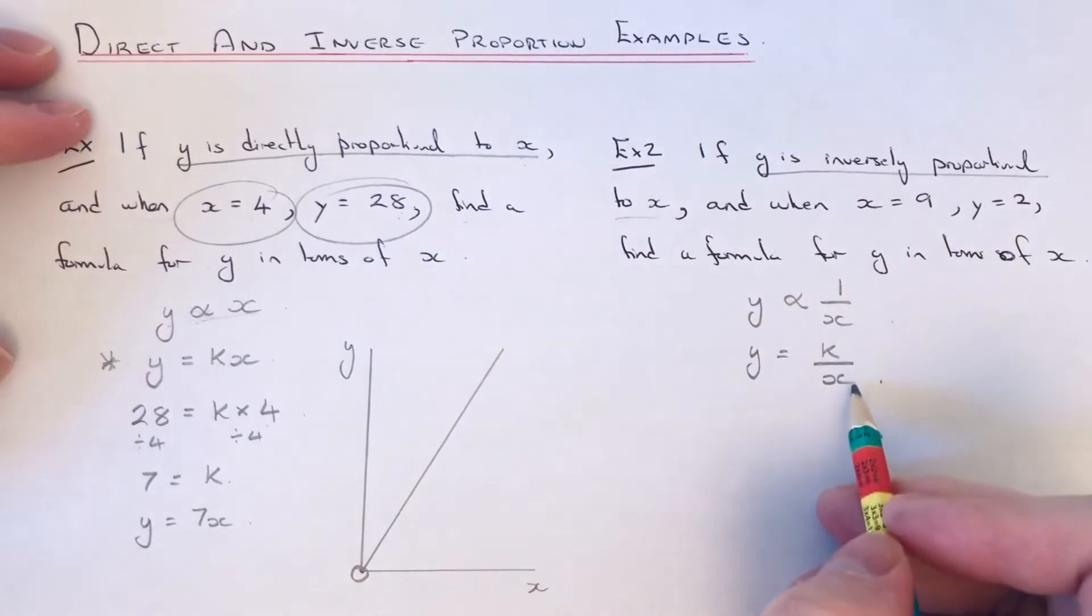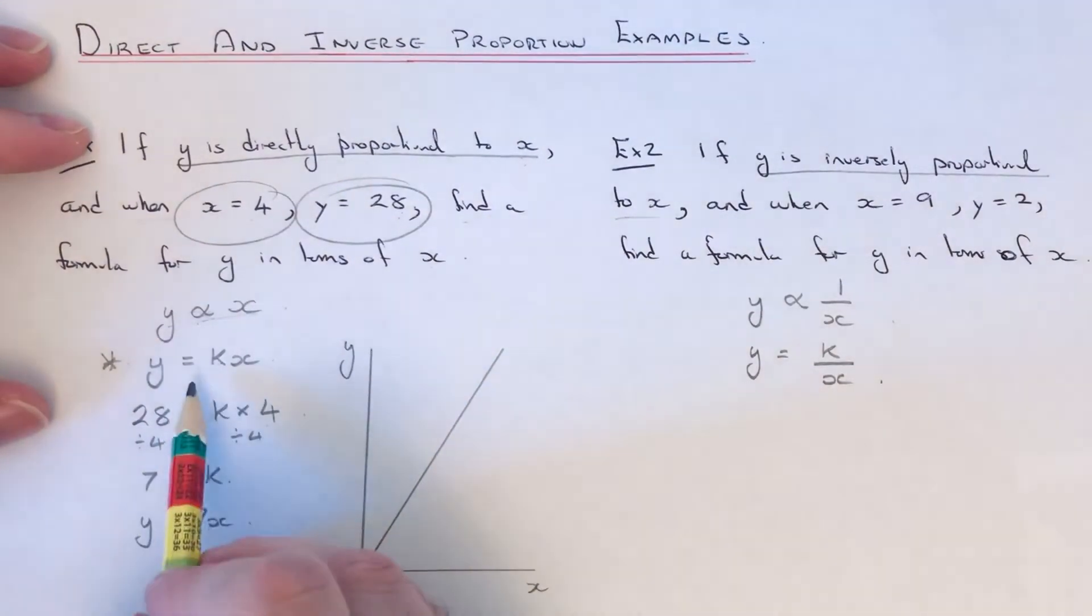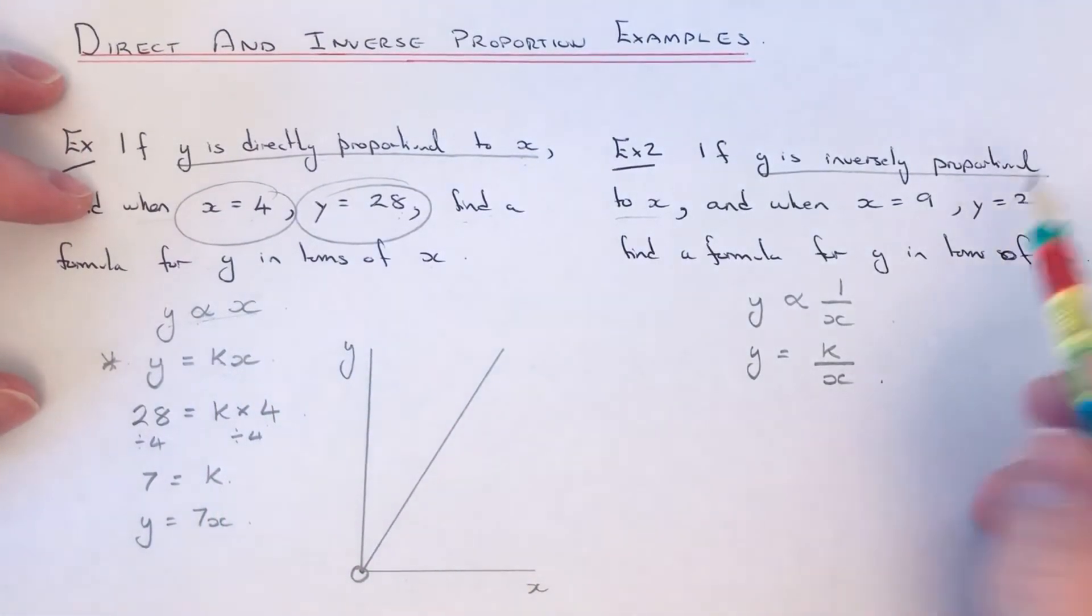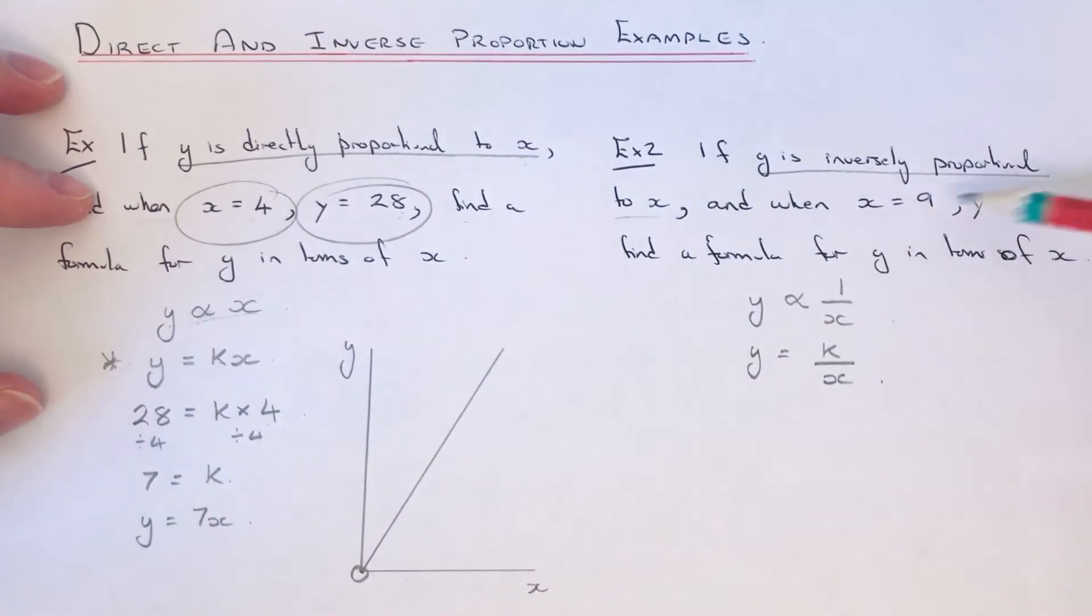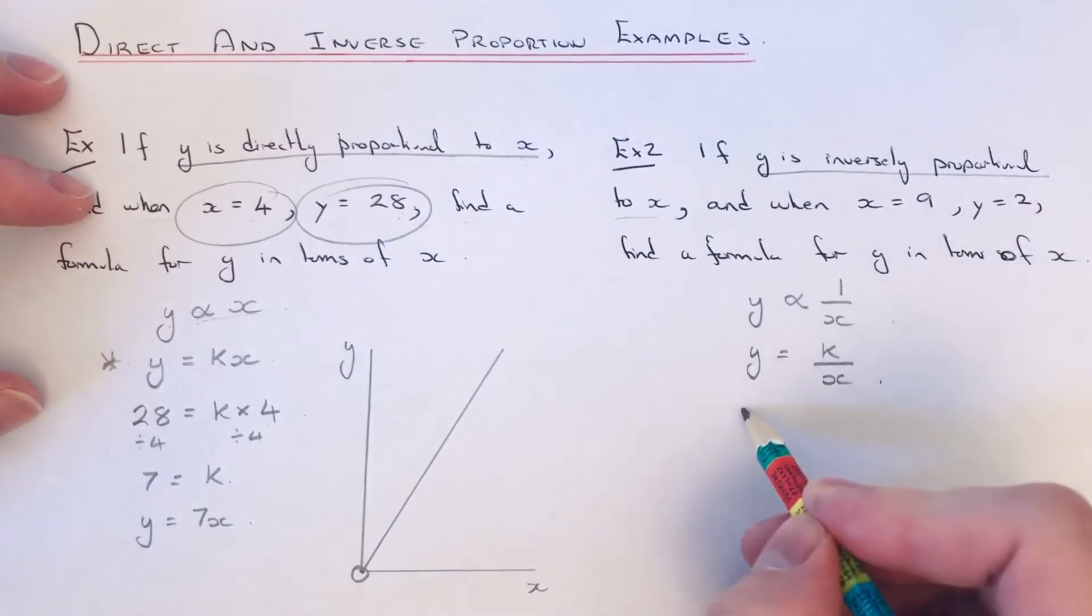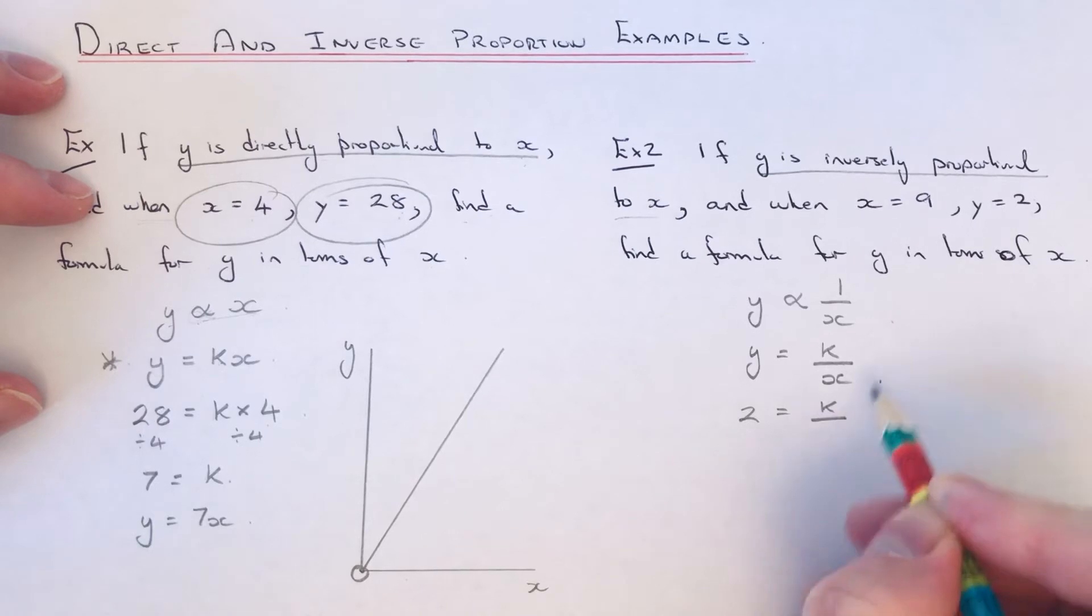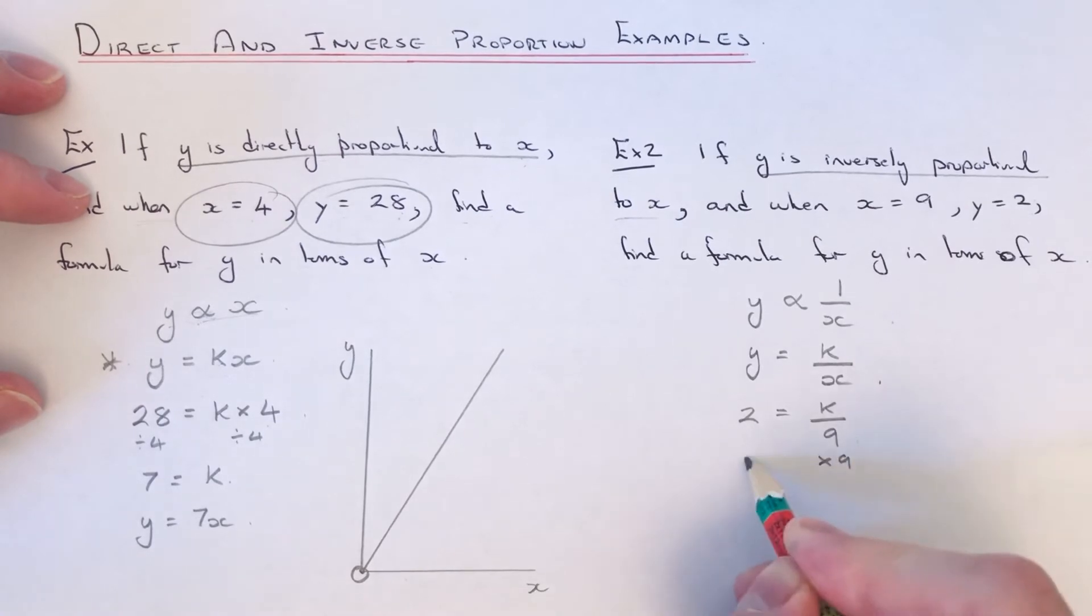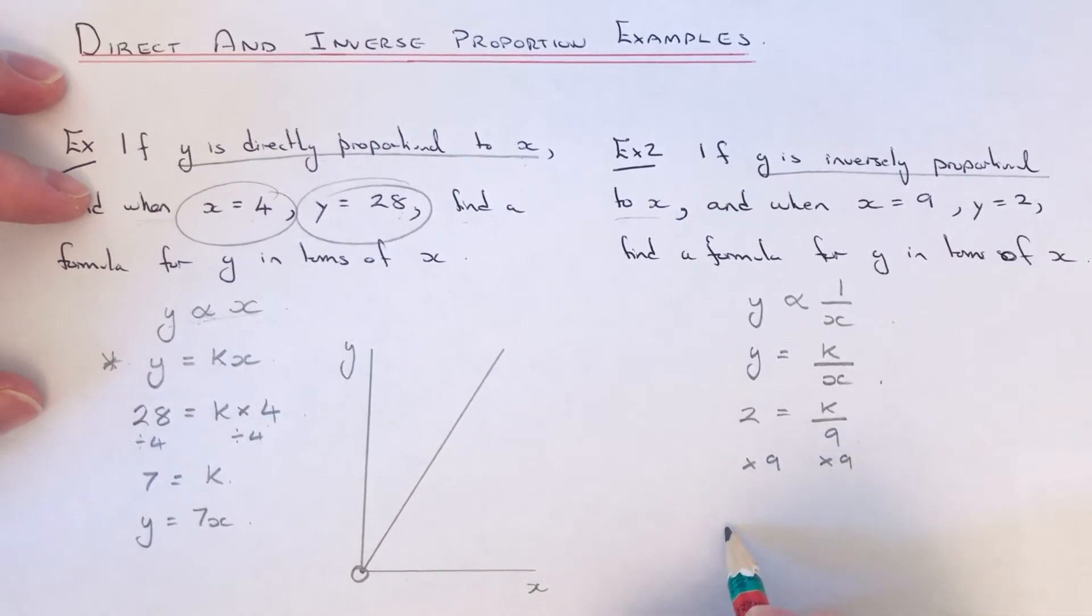So when you do inverse, it's always a divide. When it's direct, it's always a times. So again, we just fill these two numbers in that we're given to find the value of k. So when y is 2, x is 9. So this time k has been divided by 9. So to find k, we need to times both sides by 9. So 2 times 9 is 18.